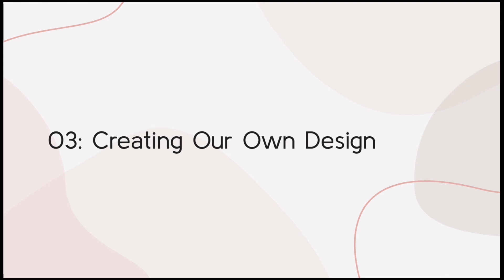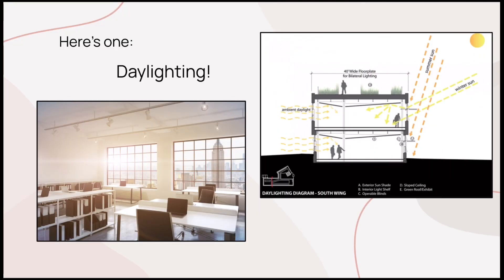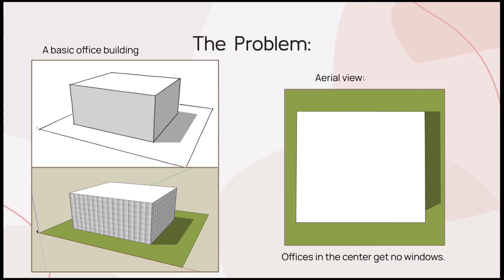This is the final part of our presentation where we will really apply the concepts that we researched to create our own design. The essential question here is: what benefits can we get from using fractals in today's buildings? One benefit we chose to explore is daylighting. Daylighting is a practice of engineering a building to maximize the amount of natural lighting that goes into the windows. Today, we will be applying the idea of daylighting to a common workplace, or office building. This is the most basic design for an office building — just a rectangular prism.